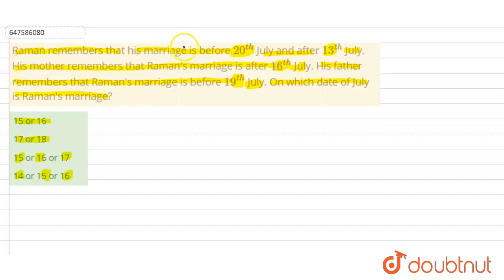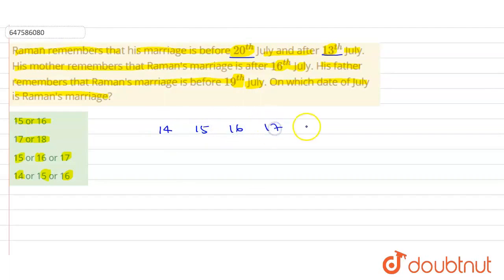The question is very easy. Raman's marriage is before 20th July and after 13th July — meaning after 13th July. So the possible dates are: 14th, 15th, 16th, 17th, 18th, and 19th July.